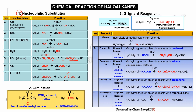The second reaction of haloalkane is elimination, which you learned in Chapter 5 for the preparation of alkene. Haloalkane reacts with ethanolic KOH under reflux to form a carbon-carbon double bond. The third reaction is the Grignard reagent — this is something new. RX (haloalkane) reacts with magnesium in dry ether solvent to form RMgX, the Grignard reagent. For example, chloromethane reacts with magnesium to form methyl magnesium chloride (CH3MgCl).